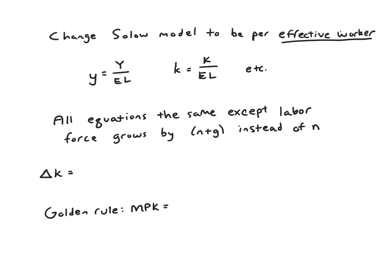That means that our delta k, our law of motion equation, our modified law of motion, will be investment minus... Before we'd have delta plus n times k, but now instead of n, we'll have n plus g. So we get I minus delta plus n plus g times k. And we can use this equation to find the steady state. Remember, the steady state would be where delta k equals 0.